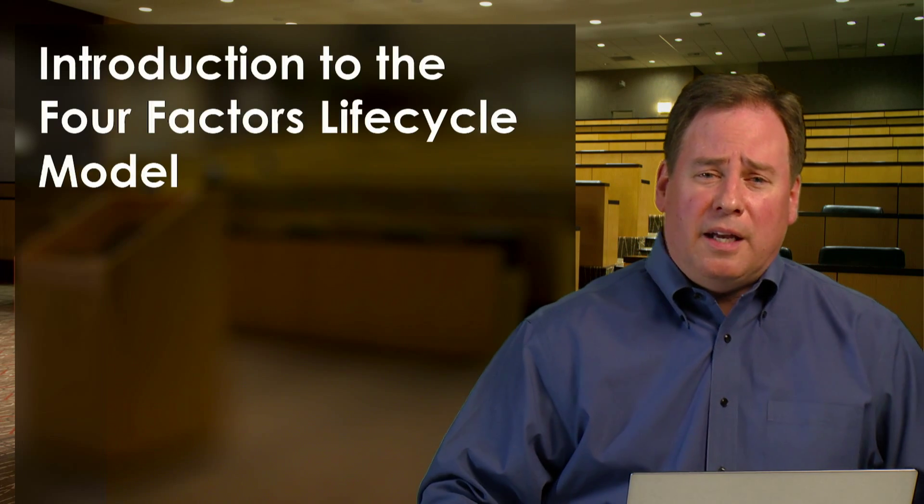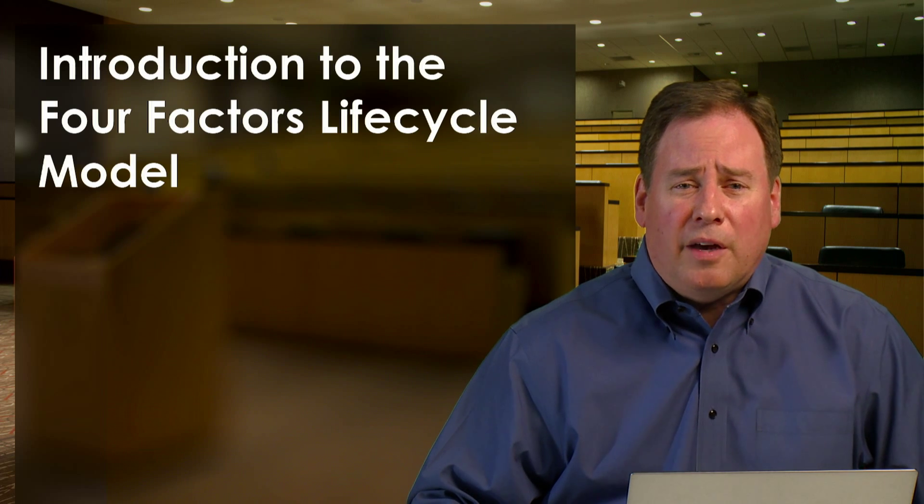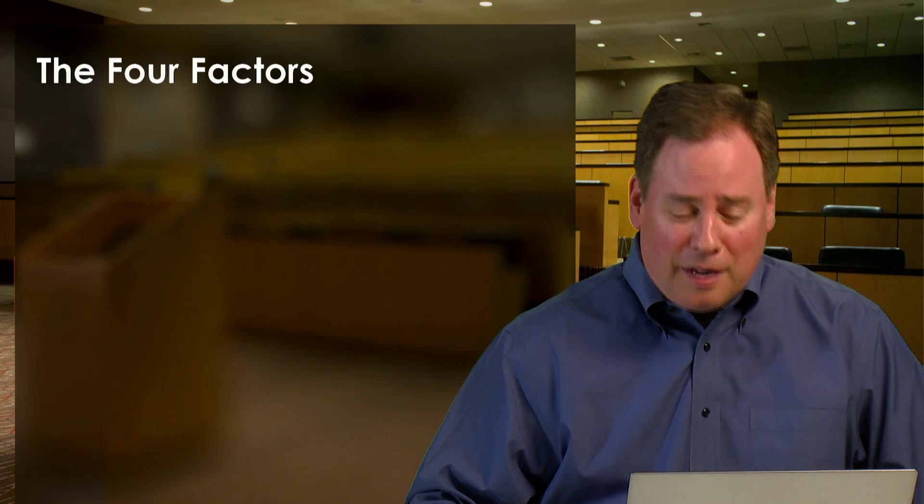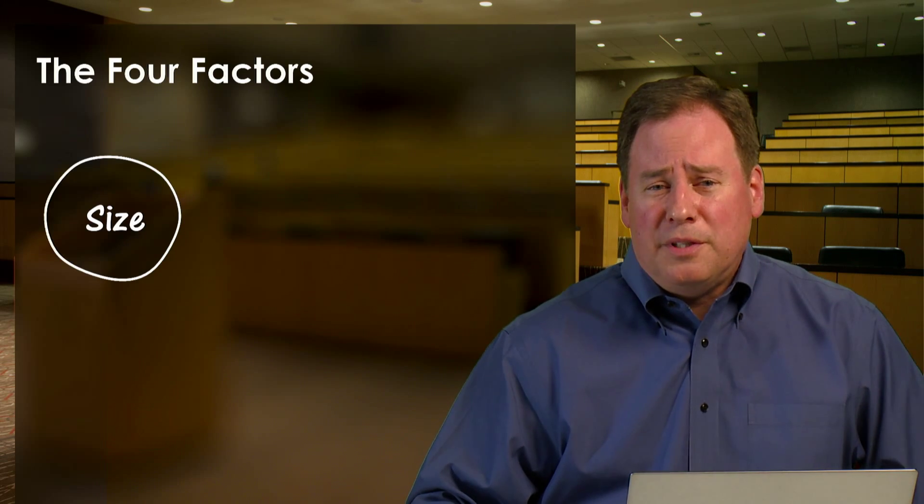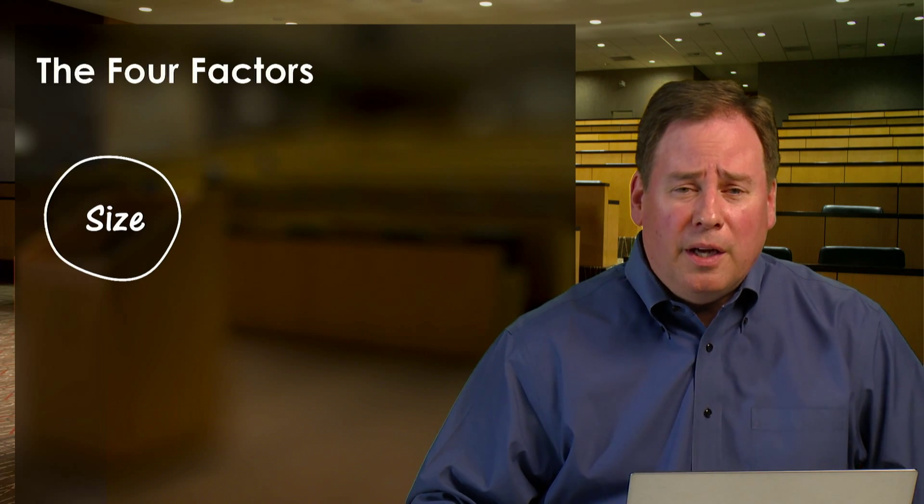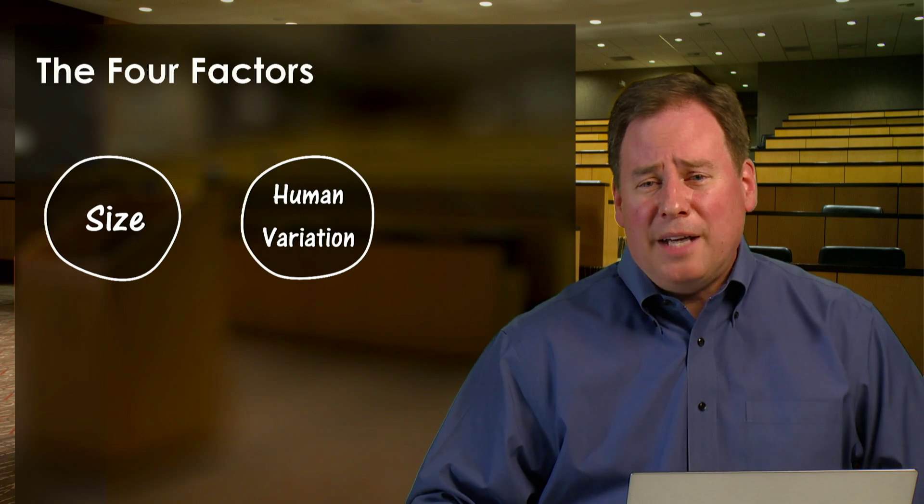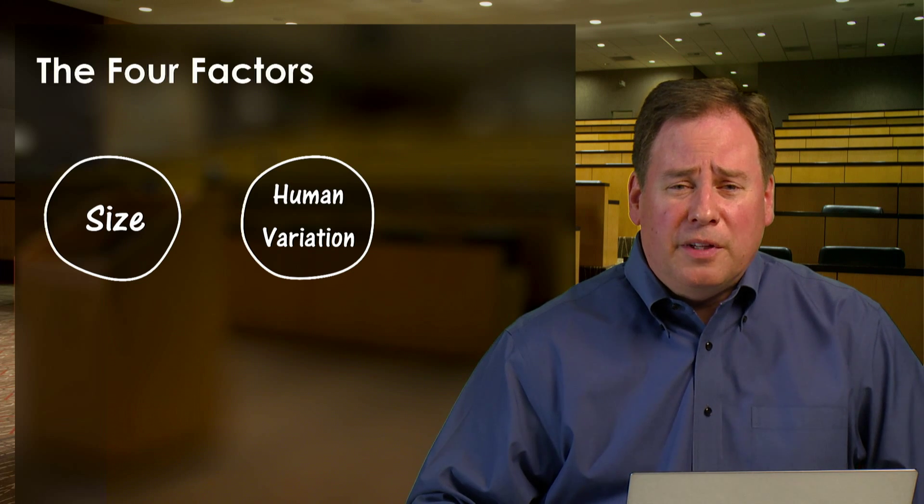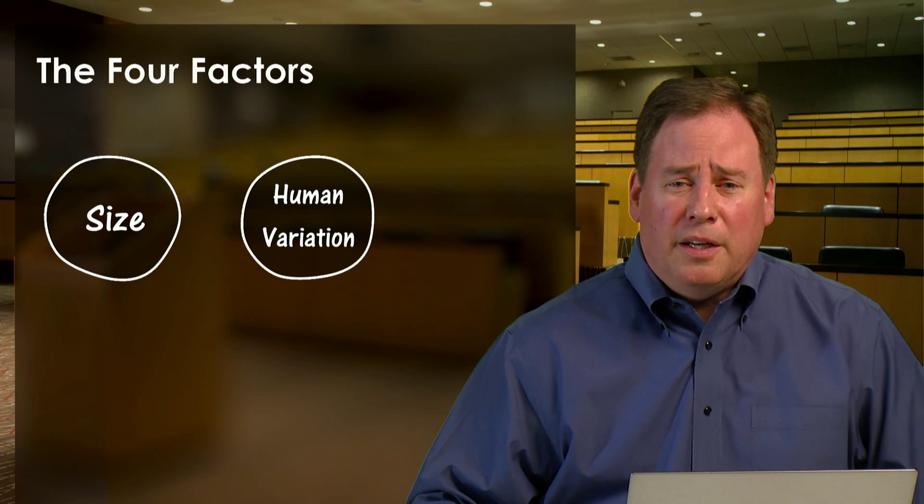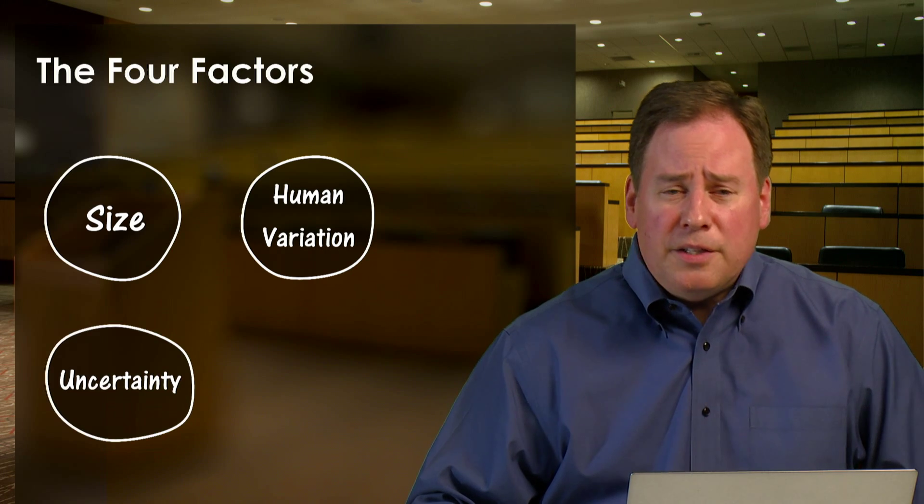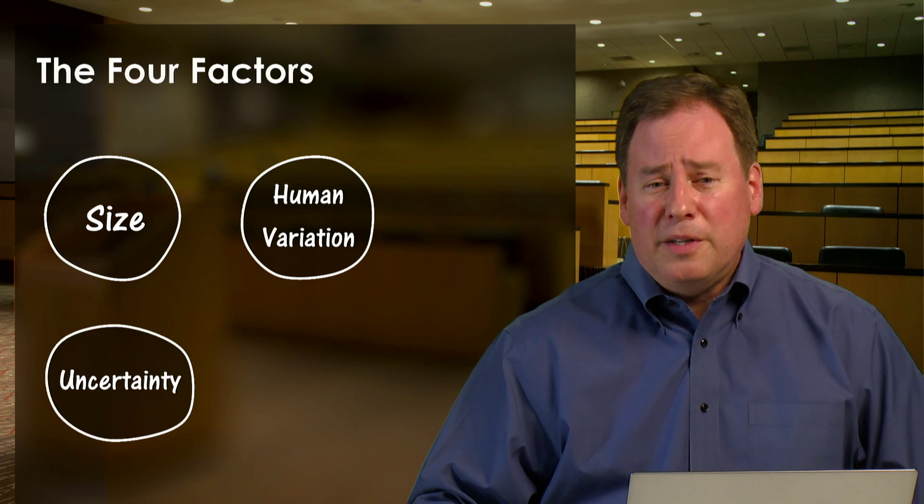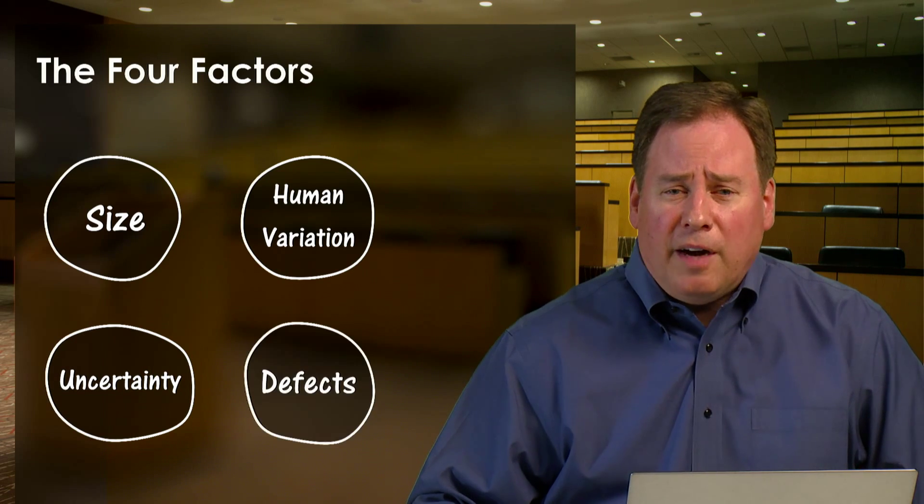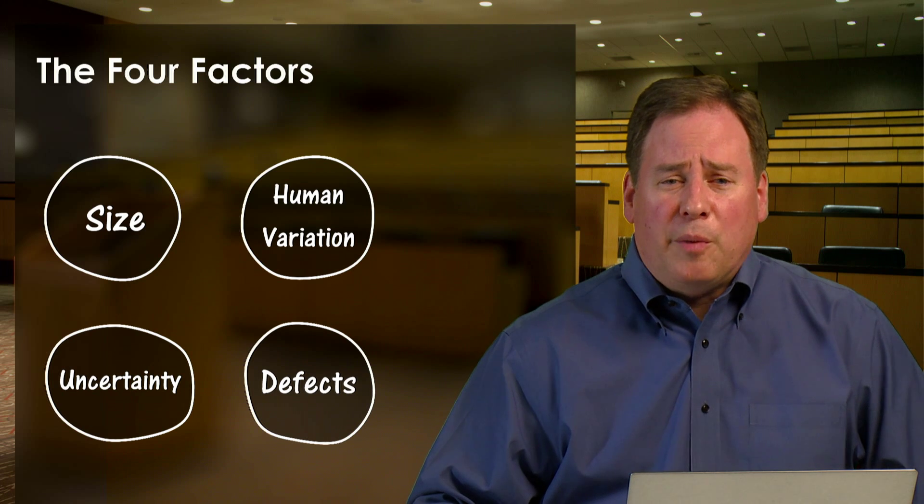So let's take a look at that Four Factors Lifecycle Model in just a little bit of detail. As the name might imply, there are four factors in the Four Factors Lifecycle Model, and those factors are size, which is how big is the thing that you're building. Human variation, which is not just human capability or the fact that there are humans on the project, but refers specifically to variations in the abilities of the humans on the project. Uncertainty, which refers to all the things that we don't know, or all the things that surprise us over the course of a project. And finally, defects, a really big influence on software projects.